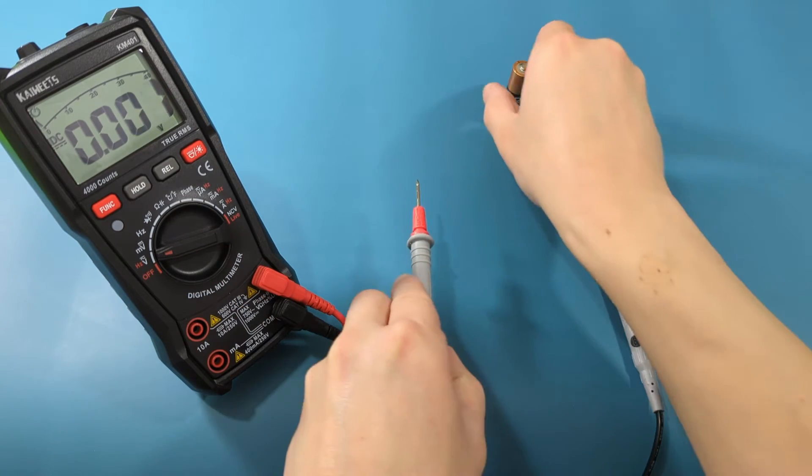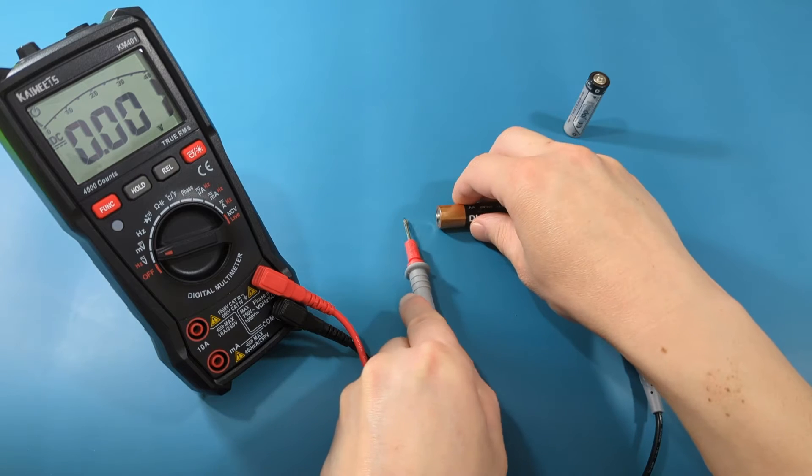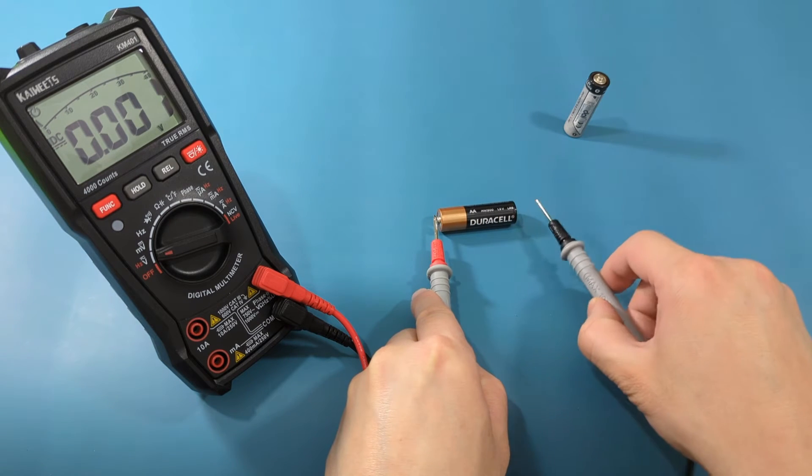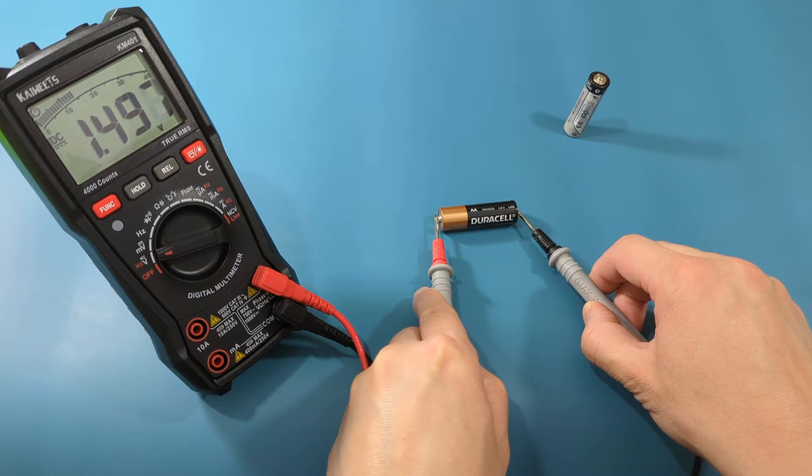The positive end of a AA battery is the flat side with a small button. On the multimeter, the red probe is the positive end, and the black probe is the negative end.